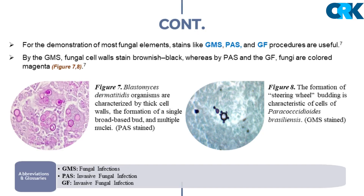For the demonstration of most fungal elements in tissue sections, stains like Gomori's methenamine silver, the periodic acid-Schiff reaction, and Gridley's fungus procedures are useful. By Gomori's methenamine silver procedure, fungal cell walls stain brownish-black, whereas by the periodic acid-Schiff reaction and Gridley's fungus procedures, fungi are colored magenta. The best contrast is obtained by Gomori's methenamine silver stain, which also stains non-viable and old fragments that are not as well demonstrated by the periodic acid-Schiff reaction and Gridley's fungus procedures.